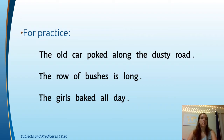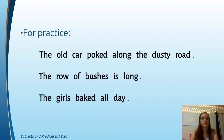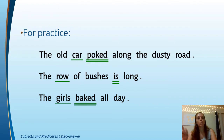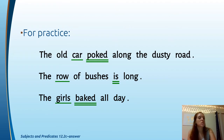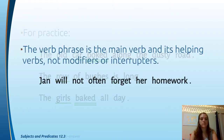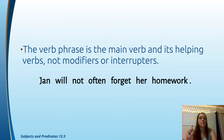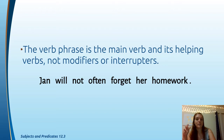Let's practice. Stop the video and find the subject (underline once) and verb (underline twice). For the second sentence, if you put 'bushes' as the subject, go back to the prepositions list — 'of' is a preposition, making 'of bushes' a prepositional phrase, so 'bushes' cannot be the subject. Also note: the verb phrase is the main verb and its helping verbs, not modifiers or interrupters. The word 'not' is not part of your verb phrase.